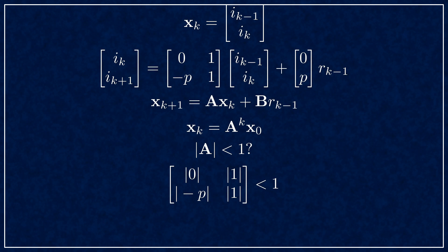Sadly, taking the absolute value element-wise does not work. In this example it would lead to a negative p being acceptable, which is clearly not. Instead, you need to look for the eigenvalues and eigenvectors of the matrix A.